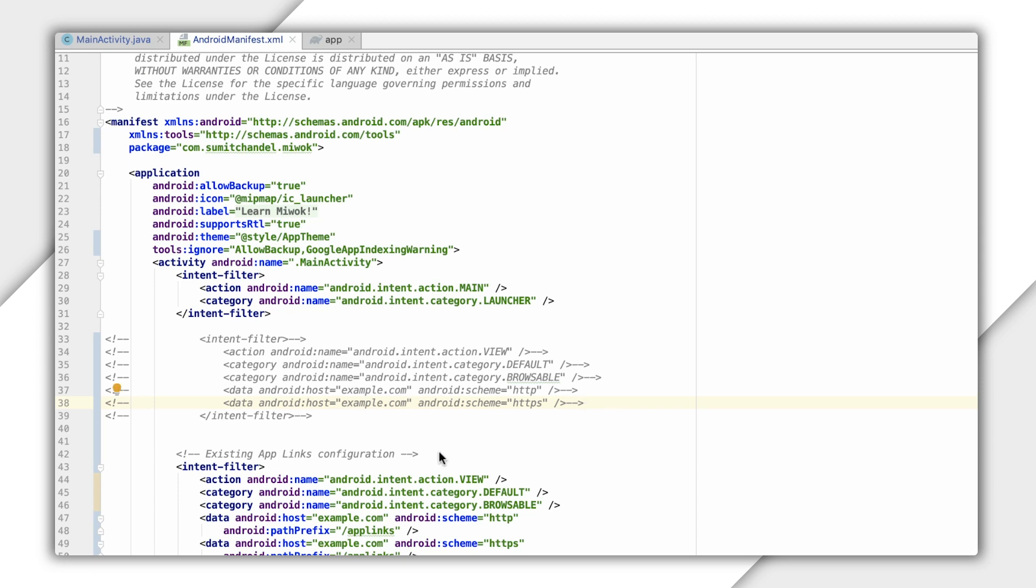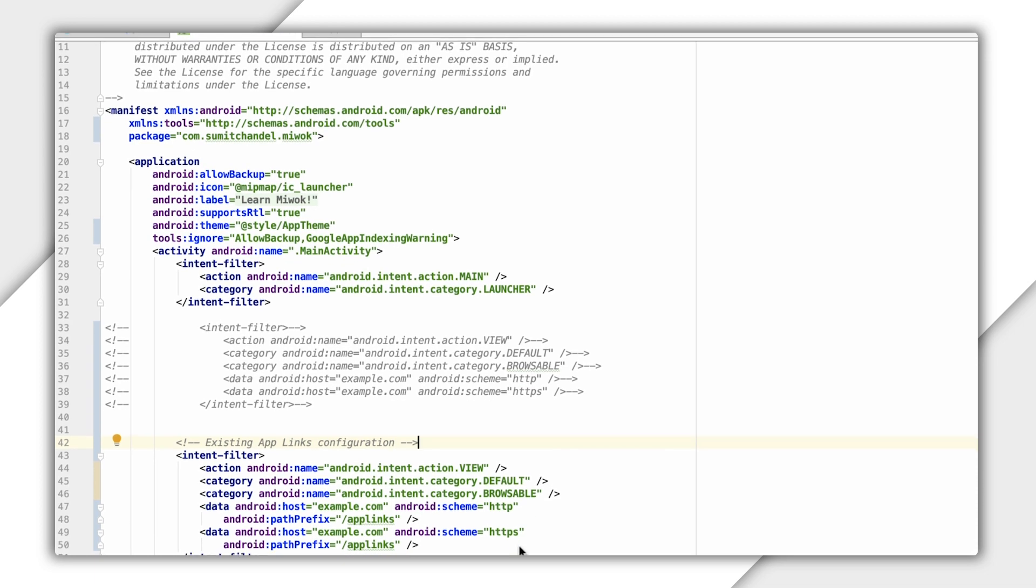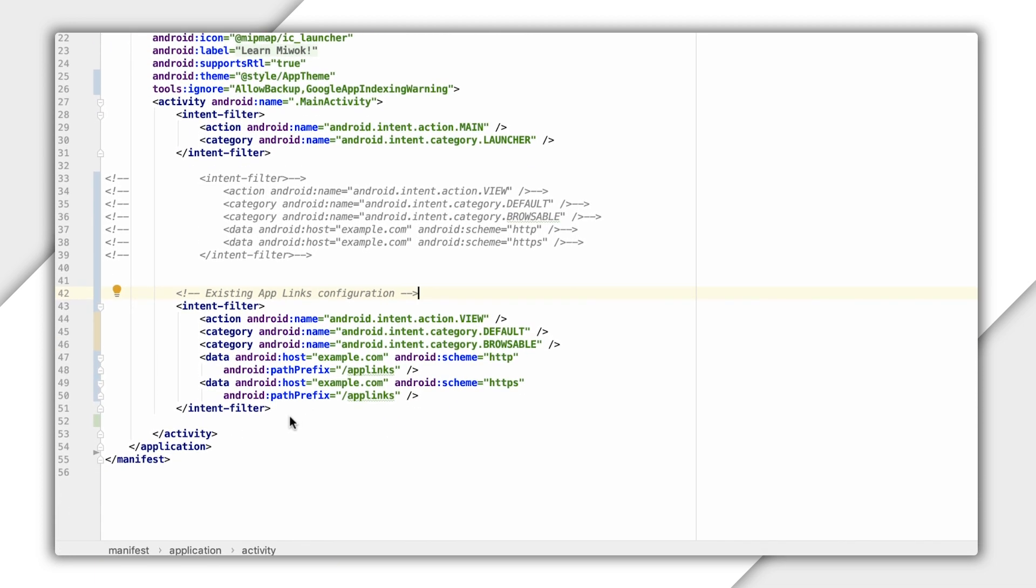And if they do, then yes, you can definitely reuse the existing app links you have configured. To do that, let's rewind the tapes and see what we need to change. Remember when we were adding intent filters to our Android manifest file? Well, if you're using app links, you will already have intent filters configured for matching URLs to the appropriate activities. So just leave those in there. No need to add anything new.